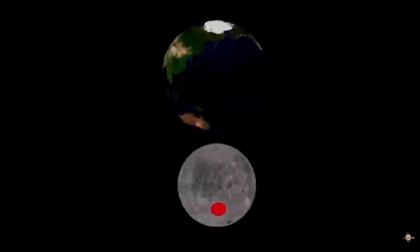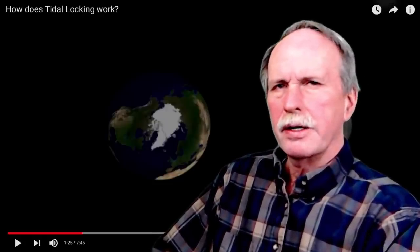Now to understand how the moon became tidally locked to the Earth, we have to understand first what tidally locked means. Tidal locking means that the day and the year of the moon in its orbit around the Earth is exactly the same. The same face of the moon always faces the Earth. The opposite side of the moon, which we call the dark side, always faces away from the Earth.